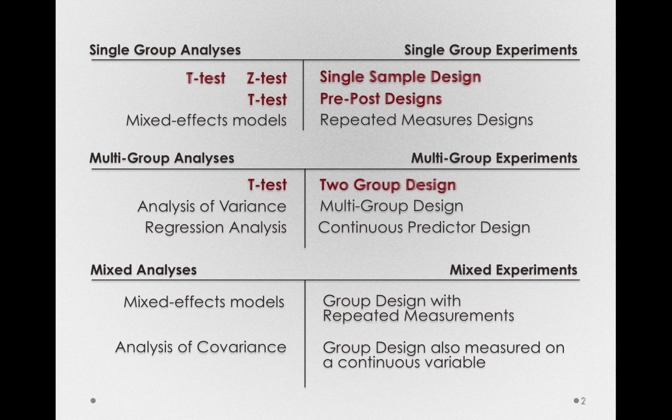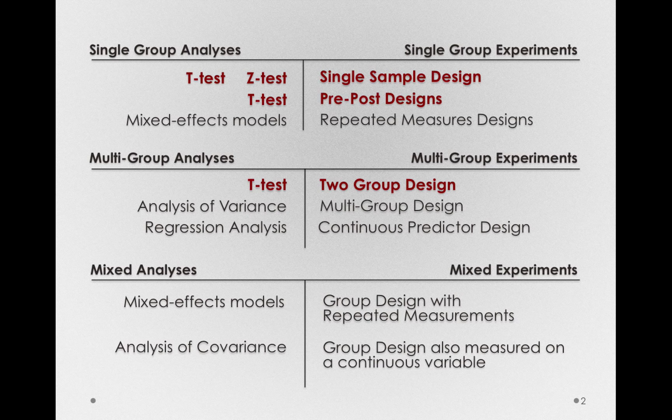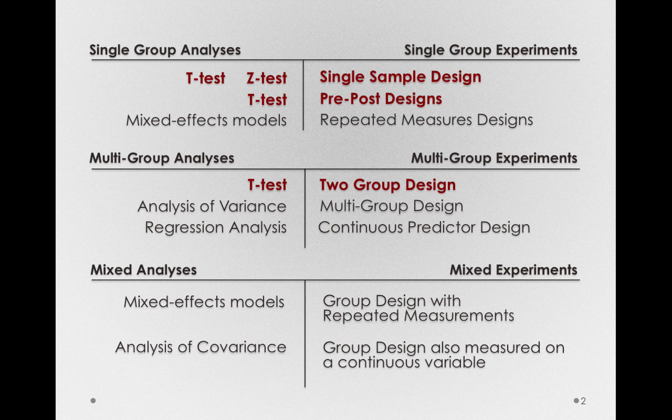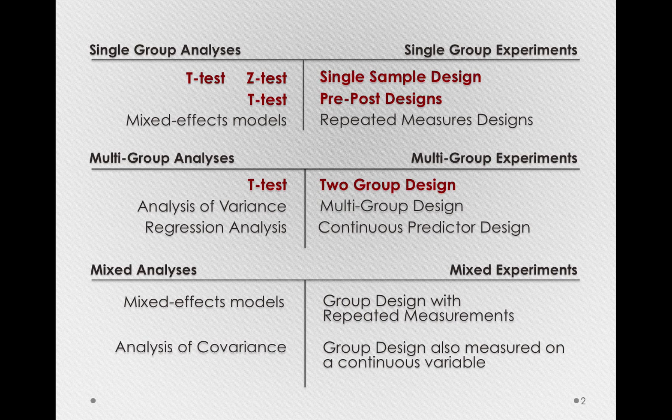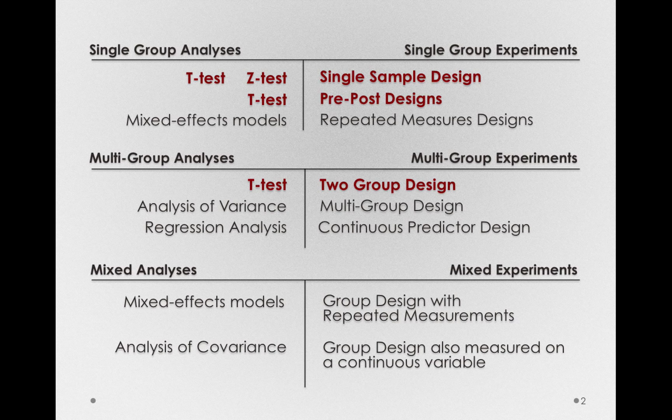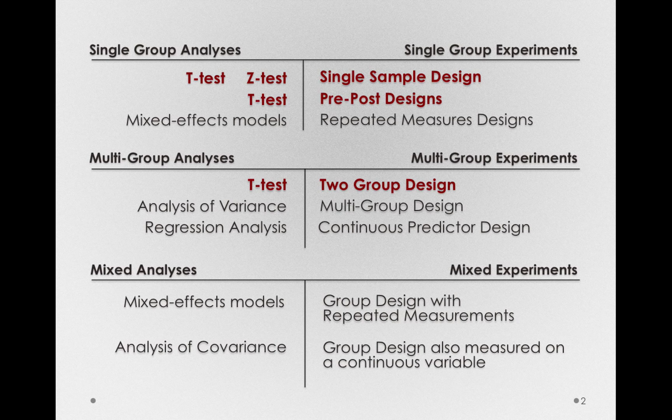In the previous modules, we looked at t-tests and z-tests as ways to perform simple experiments and make inferences about populations. Our z-test needed the most information about the population. To perform a z-test, we needed to know not only the population mean before treatment, but also a population standard deviation or variance.